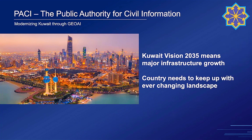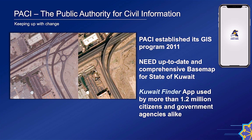The Public Authority for Civil Information, PACI, is responsible to record data about people, addresses, and businesses. We have created a comprehensive base map for the whole State of Kuwait, which is used by more than 170 different organizations. We have released a GIS-based hyper-local search application called Kuwait Finder with more than 1.2 million users.